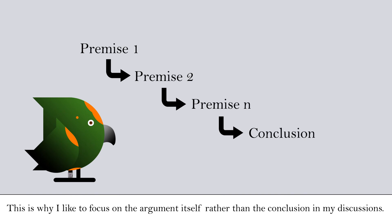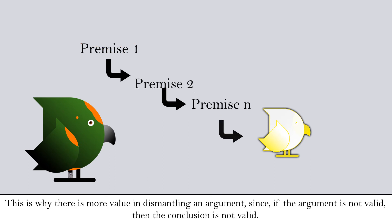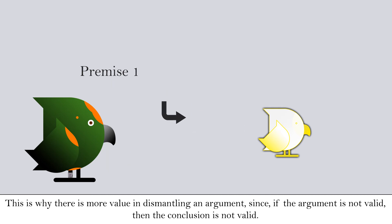This is why I like to focus on the argument itself rather than the conclusion in my discussions. For example, we can argue until the end of time about the conclusion 'there is a god,' whereas if we look at the premises used to get to that conclusion, we can be done discussing in much less time. This is why there is more value in dismantling an argument — since if the argument is not valid, then the conclusion is not valid.